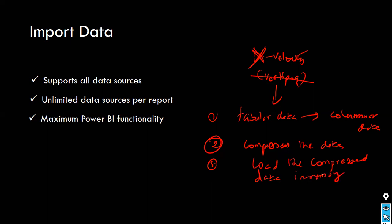Anything in memory performs faster — in-memory databases are very popular. The first task of X-Velocity is converting your table or data into columnar data. You might wonder why it has to convert to columnar data. Examples of columnar databases include HBase and Cassandra, which store data in columnar form. If you store data in columnar form, the performance will be much faster.